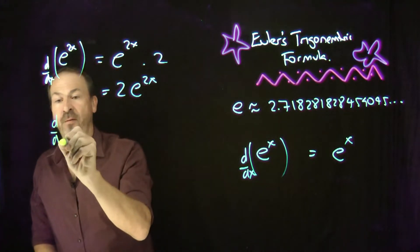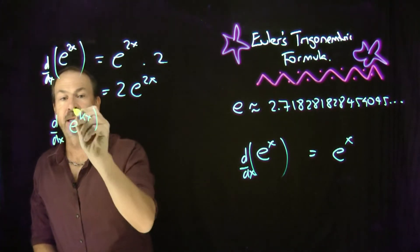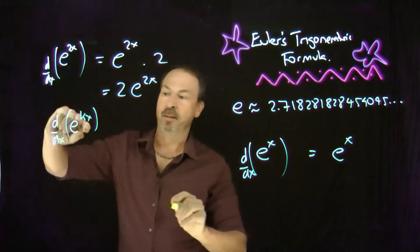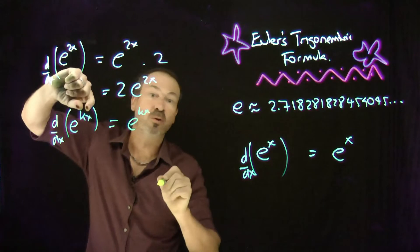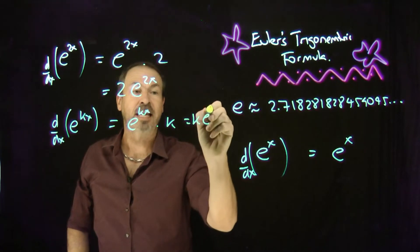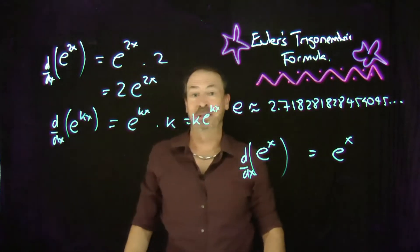In general, the derivative of e to the kx, some number k, would actually be - let's work it out. The derivative of e to the something is itself. Chain rule says times the derivative of what's inside. I get k times e to the kx, k times itself.